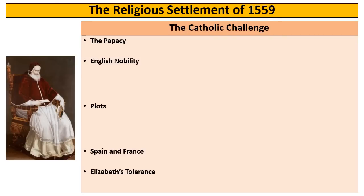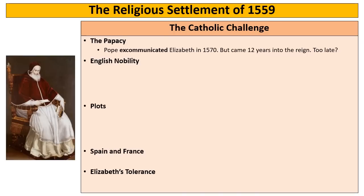The papacy is an example of the Catholic threat being strong in theory. The Pope could excommunicate Elizabeth, and in fact he does this in 1570. In theory this is very strong as it gives every Catholic in England permission to try and overthrow her. However, this comes 12 years into Elizabeth's reign — by that point many Catholics had learned to accept the settlement. It has little impact in England and it also becomes treasonous to share a copy of the excommunication, so very few people in England actually see it.